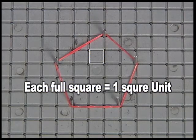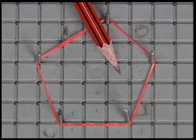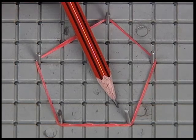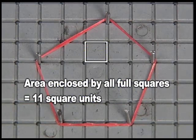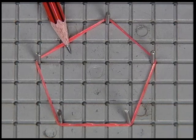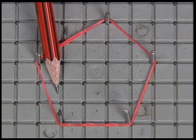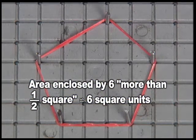Take the area enclosed by each full square to be one square unit. There are eleven full squares, so the area enclosed by the full squares is eleven square units. Now take the area enclosed by more than half squares to be one square unit. There are six such squares, so the area enclosed by them is six square units.